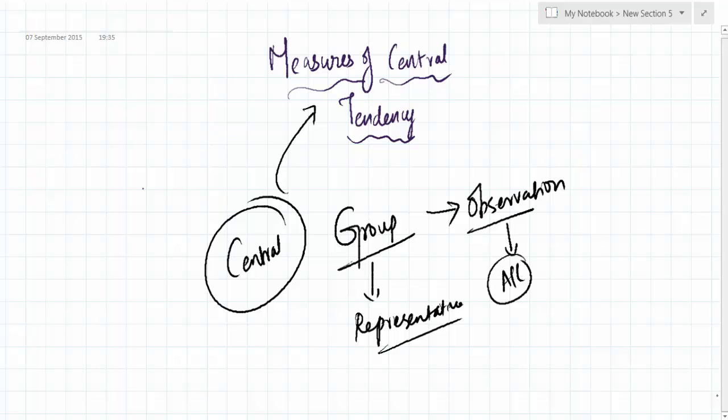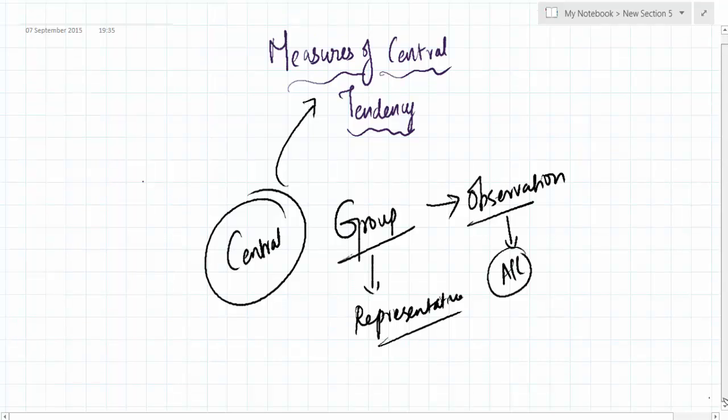There is another name for this measure of central tendency, that is averages or measure of locations. The other name for the measure of central tendency is nothing but averages.